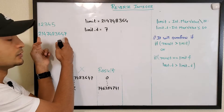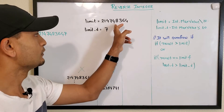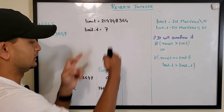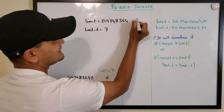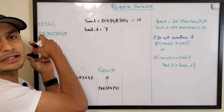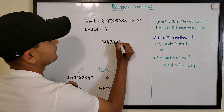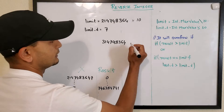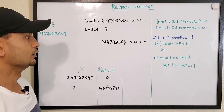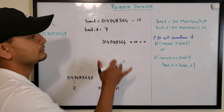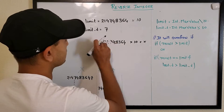We pre-calculate a limit by dividing the max 32-bit value by 10, which removes the last digit 7, giving limit = 214748364. If at any point in our process the result reaches or exceeds this limit and we are about to multiply by 10, we know that will exceed the 32-bit max. So if result is greater than limit, we stop and return zero.